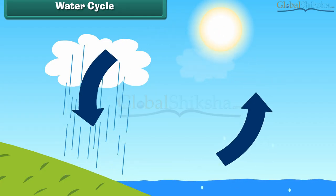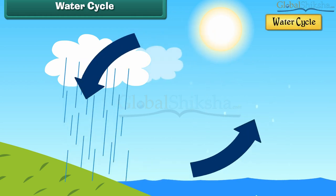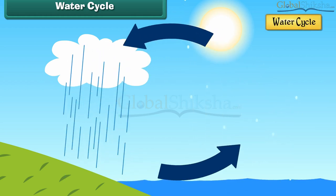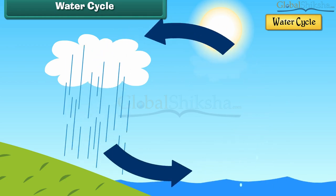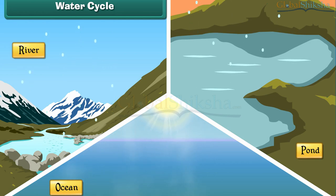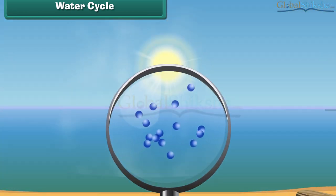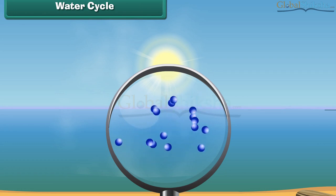Water cycle is the movement of water from earth to sky and then back to the earth. Water in ponds, rivers, and oceans gets heated by sun rays in the daytime. The heated water turns into water vapour and rises up.